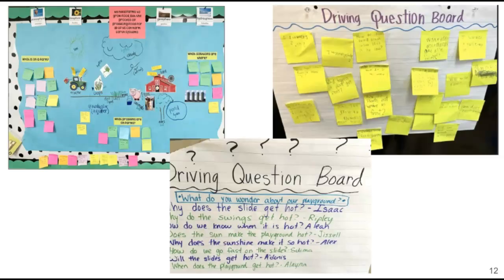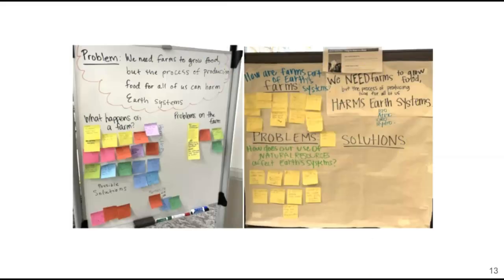Here are examples of driving question boards from other K–5 units. They depict the students' questions in categories, some along with a drawn model from the unit. Some driving question boards are simple lists of questions or groups of sticky notes posted on chart paper. Teachers and students can manipulate and move around questions and label categories together.